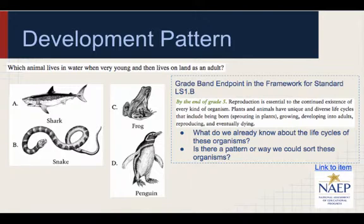Life cycles are identifiable patterns in science. They provide opportunities to compare and contrast the development of different organisms. Teachers might start by asking students to classify the different organisms. Can you think of a reason why an organism might live in the water when it is young and on land as an adult? Why might this be a useful adaptation? What changes might we see? Which organism best fits this pattern of change?